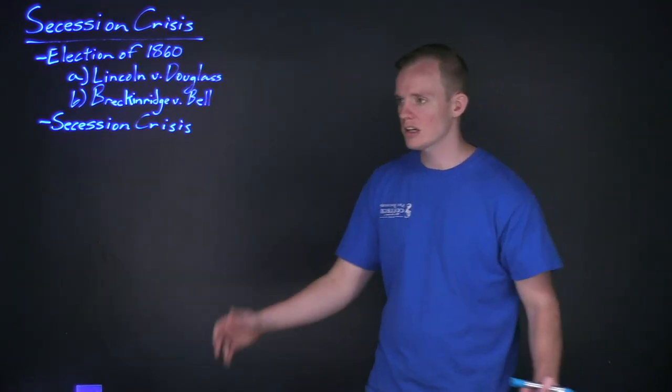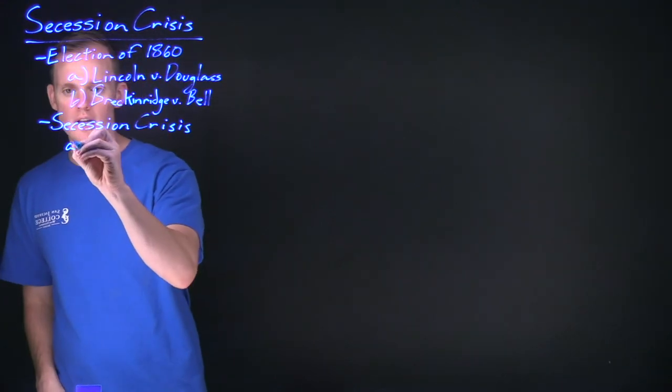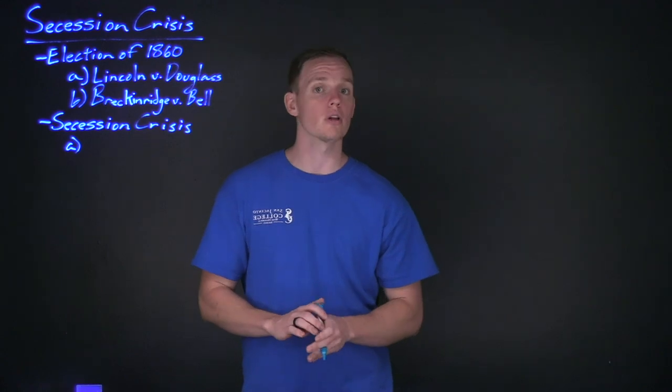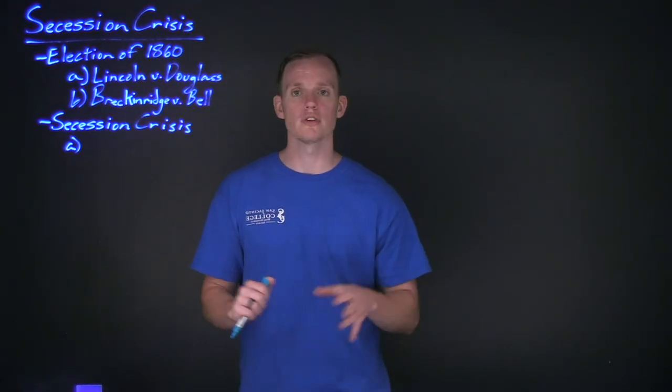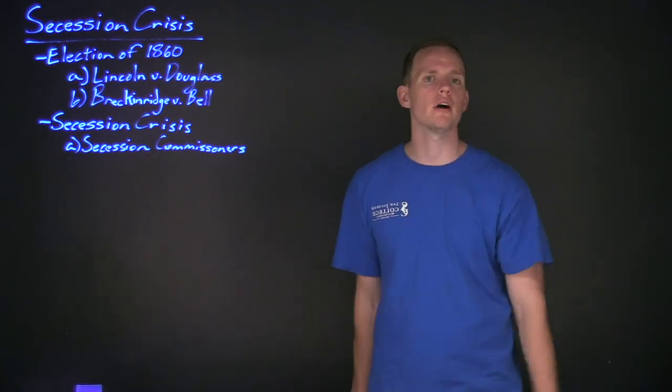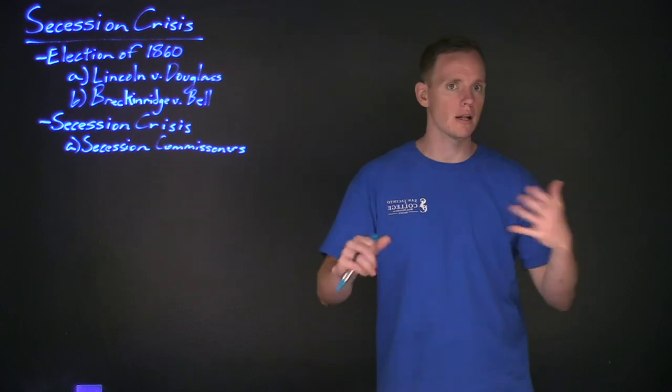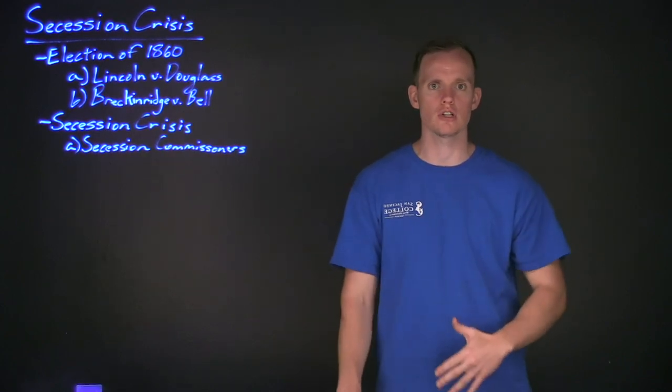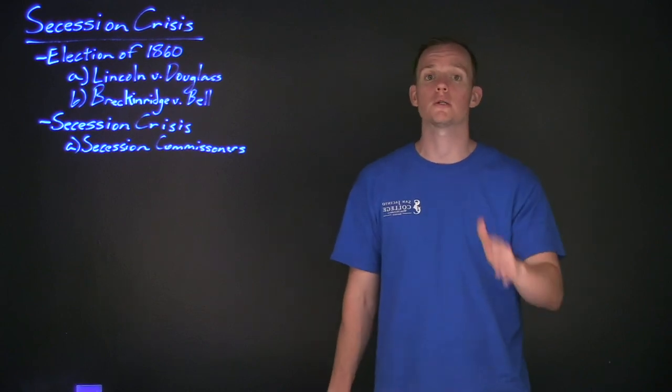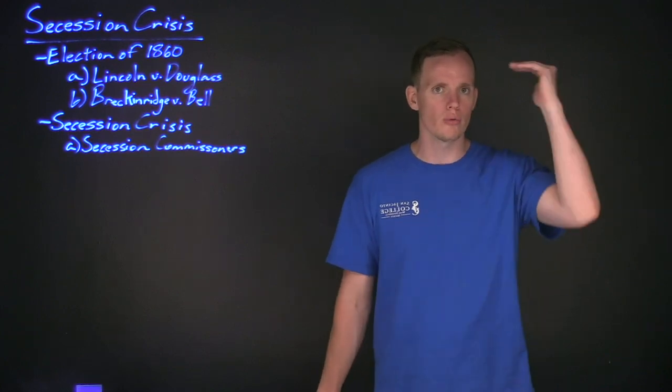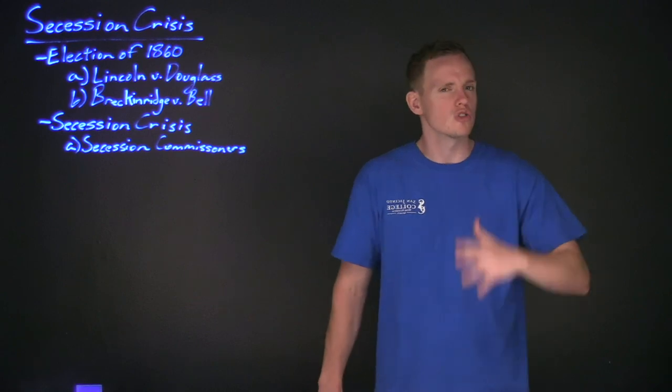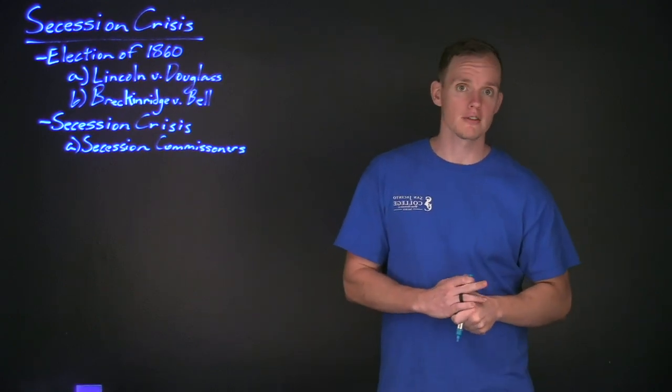As South Carolina initially was the only state to secede, they would begin to send out secession commissioners. These were individuals sent out to places like Georgia, Texas, Louisiana, Alabama, going to their special conventions to deliver rousing speeches with racially charged rhetoric to convince Southerners that the only way to protect slavery and protect the racial social order of whites on top and everybody else on the bottom was to secede and break away from the union, to form a new government that would protect this institution.